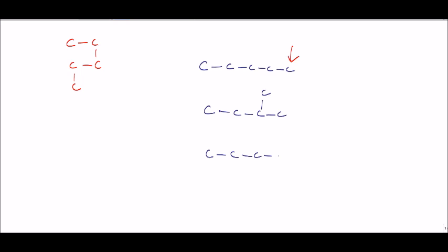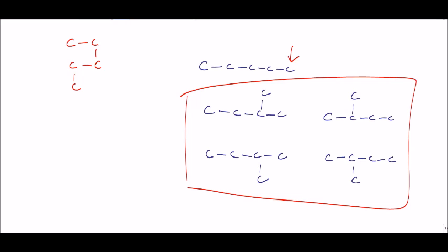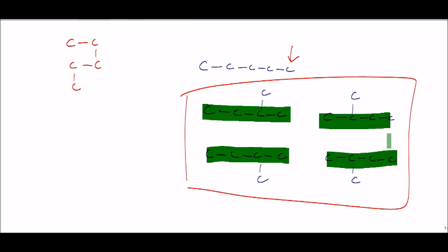One place that we could put it is there, another place is there, another one is there, and another one is there. But all of those are exactly the same because what you can hopefully see is that what we have in fact is four in a line in each case, and on the second carbon in each case we've got a carbon branch. Bear in mind that I'm just showing the carbon skeleton with these, so once we've drawn the structures we always have to remember to add the hydrogens as well.